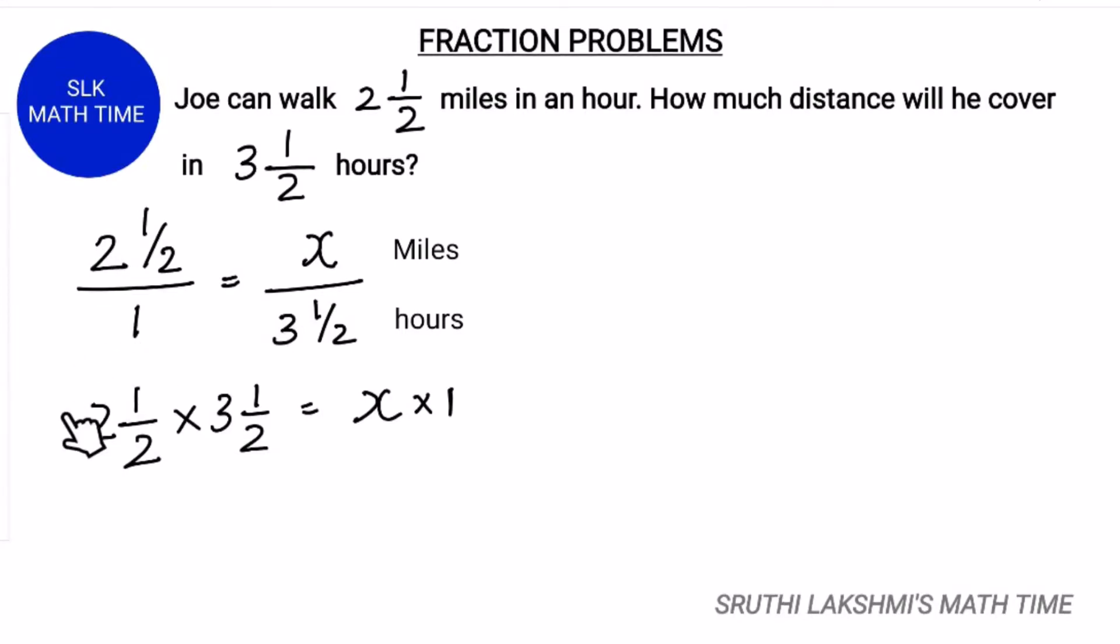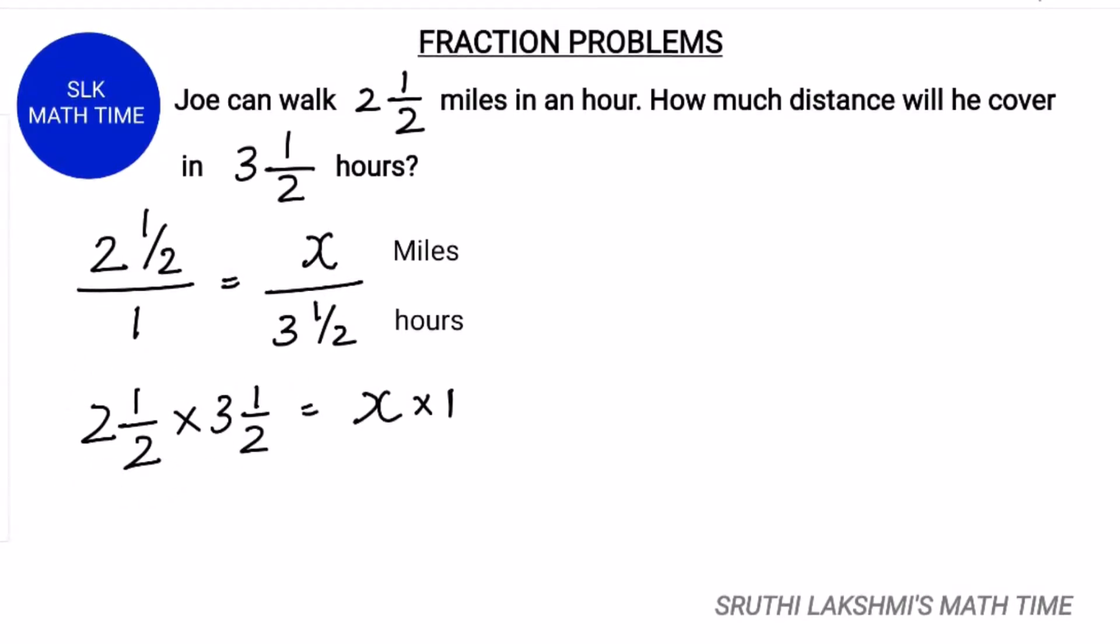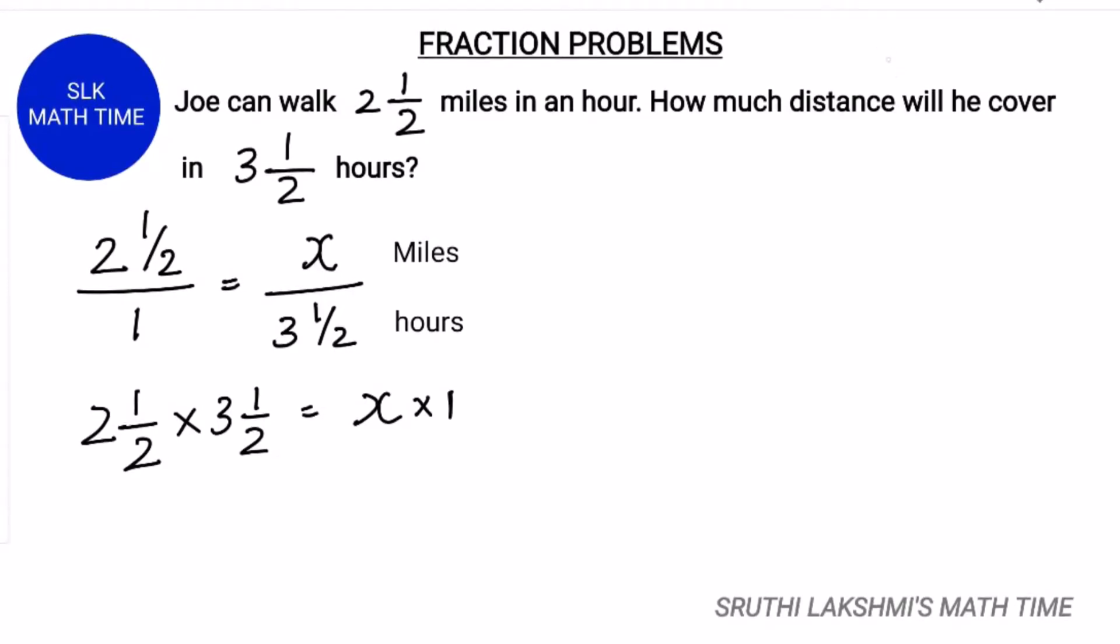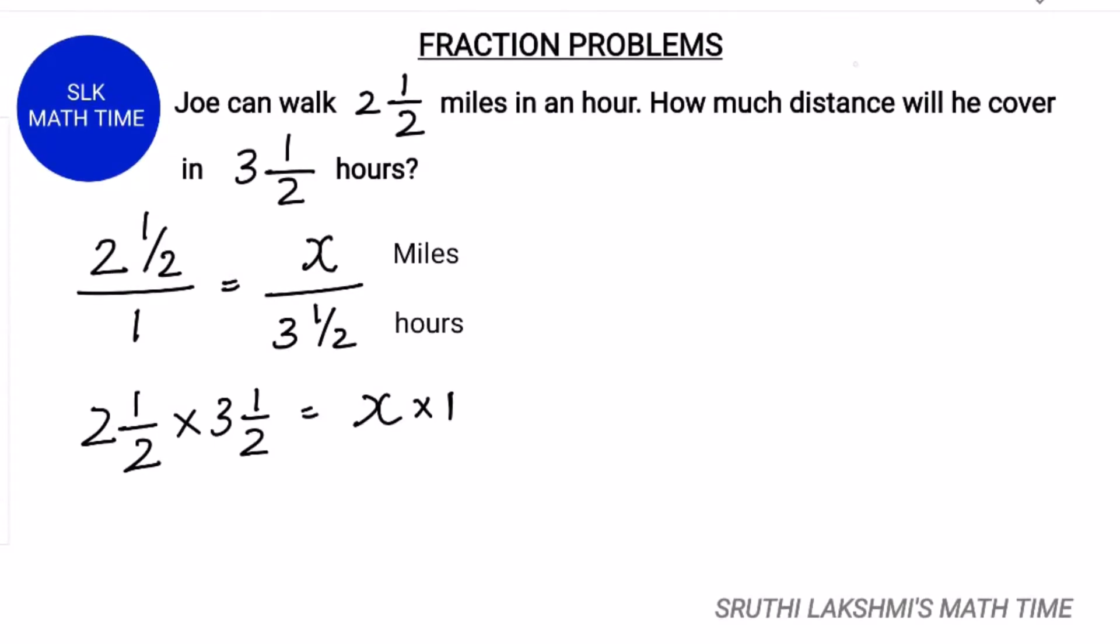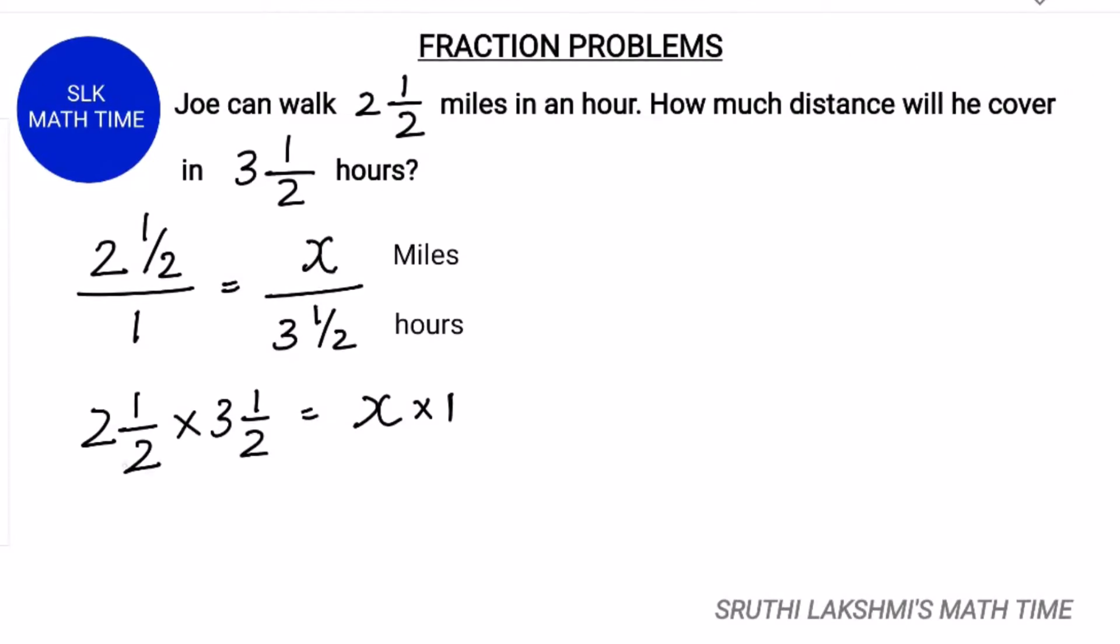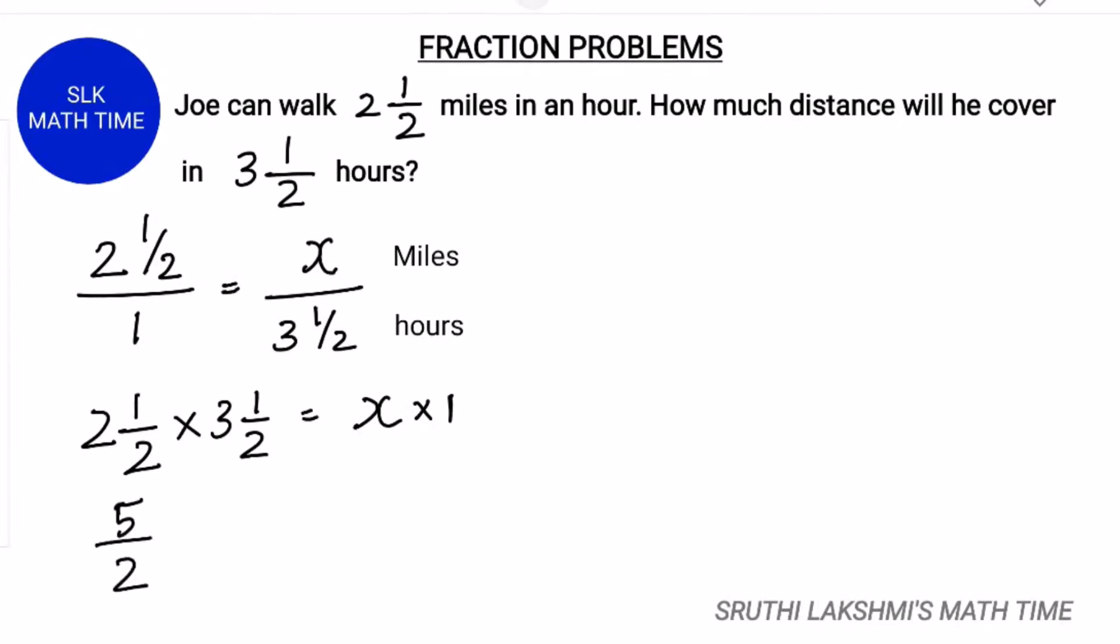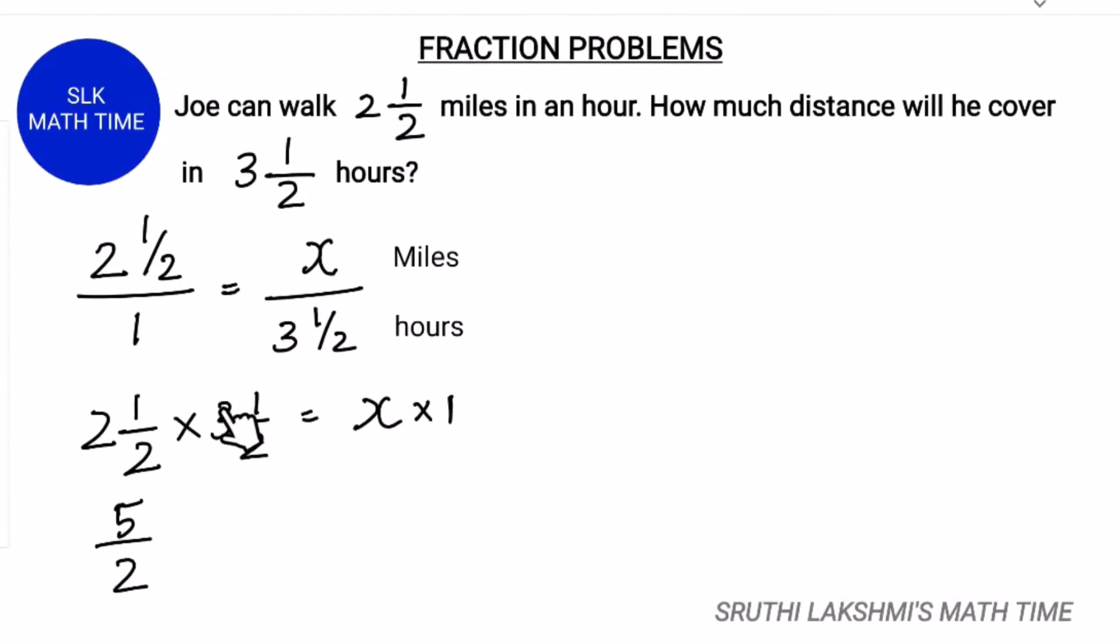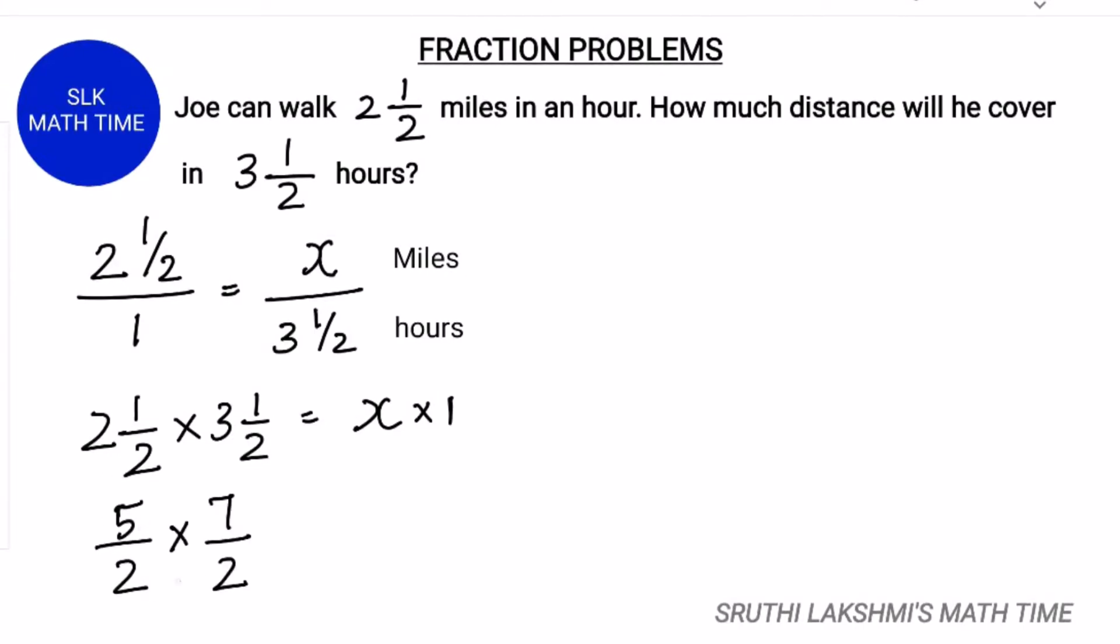Since these are mixed numbers, we have to change them into improper fractions. You can see how to change mixed numbers into improper fractions in my video. Here is the suggested link. So 2 times 2 is 4 and 4 plus 1 is 5 by 2. And next 2 times 3 is 6 and 6 plus 1 is 7 by 2.